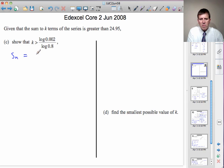The sum to n terms is given by A multiplied by 1 minus R to the n divided by 1 minus R.